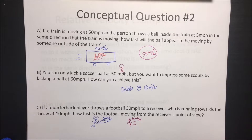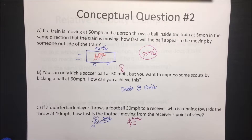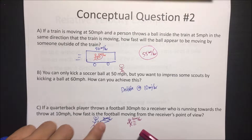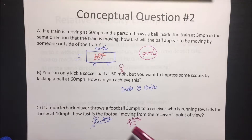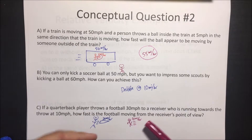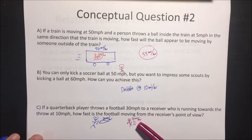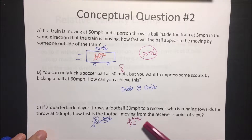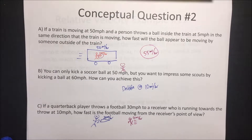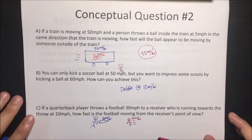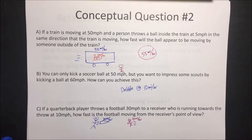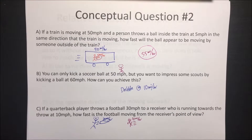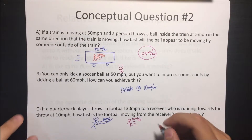I get answers like 30 miles an hour, 40 miles an hour, 20 miles an hour — but what it's going to look like is he's going to be going towards it. This ball is going to come faster to him than if he was just standing still. So it's going to look like it's coming at 40 miles an hour. And if you've ever tried this, it's a lot harder to catch a ball when you're running towards it than when you're running away from it. So this is going to look like it's going 40 miles an hour.